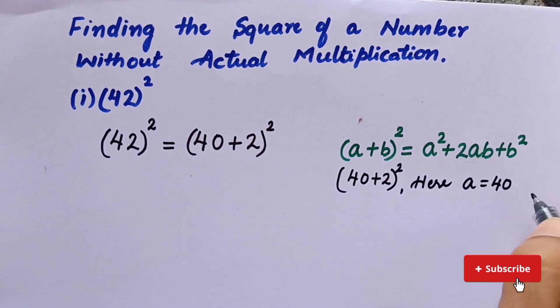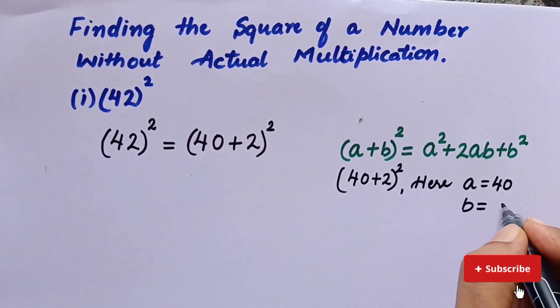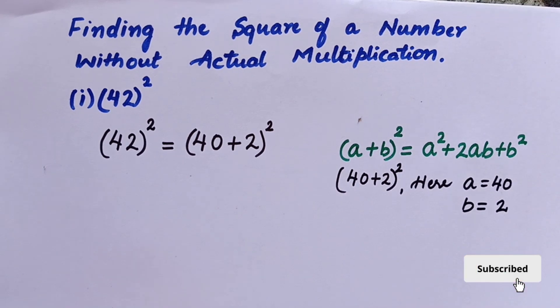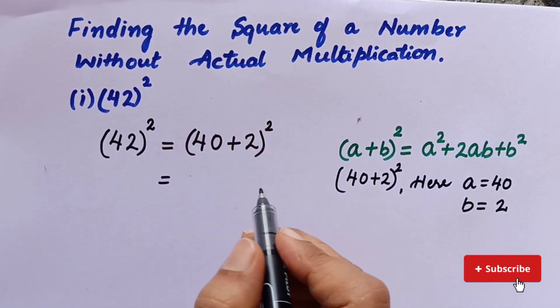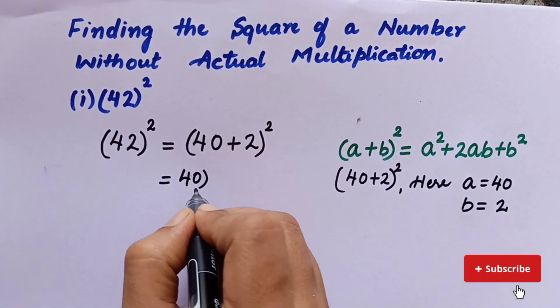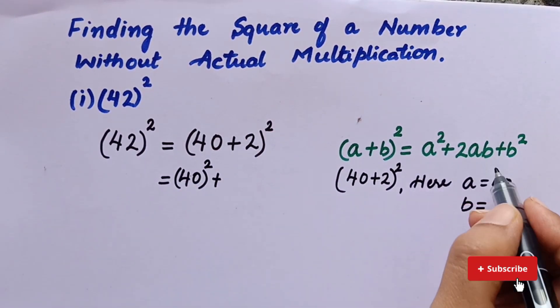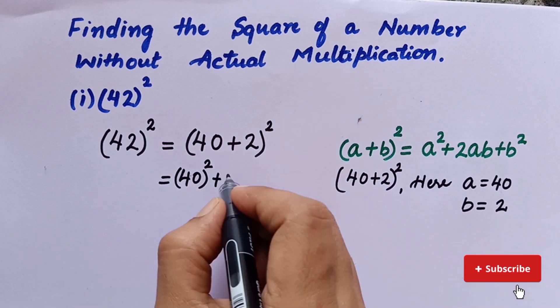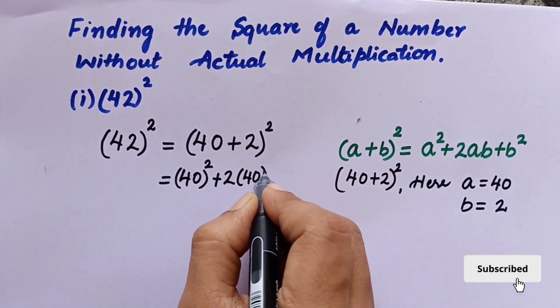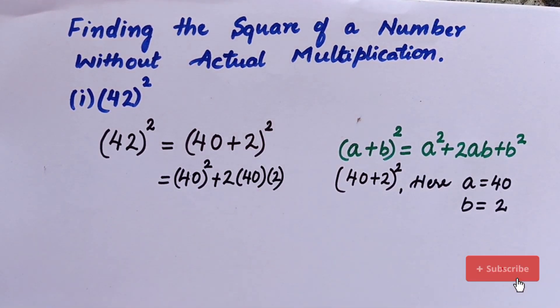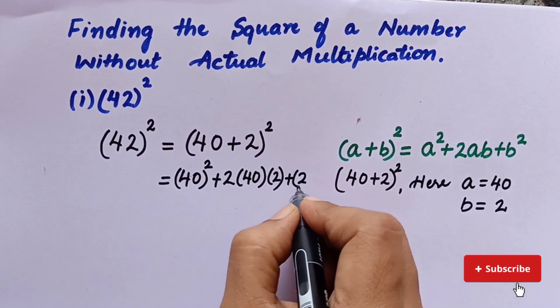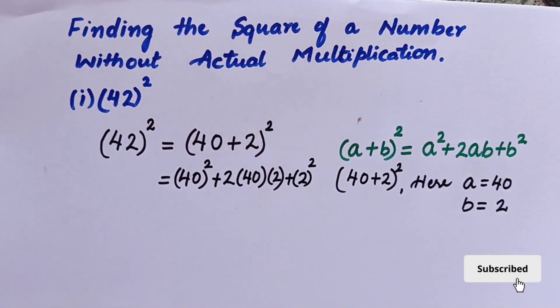So now we can use this identity and solve the problem. Here in place of a² we can write 40² because a is equal to 40, and 2 into a into b, that is 2 into 40 into 2, plus b² which is equal to 2².